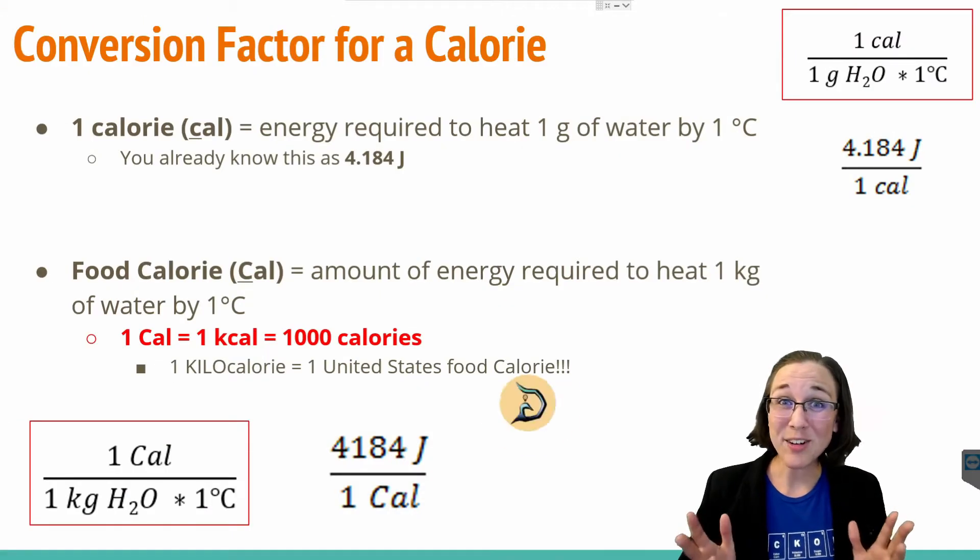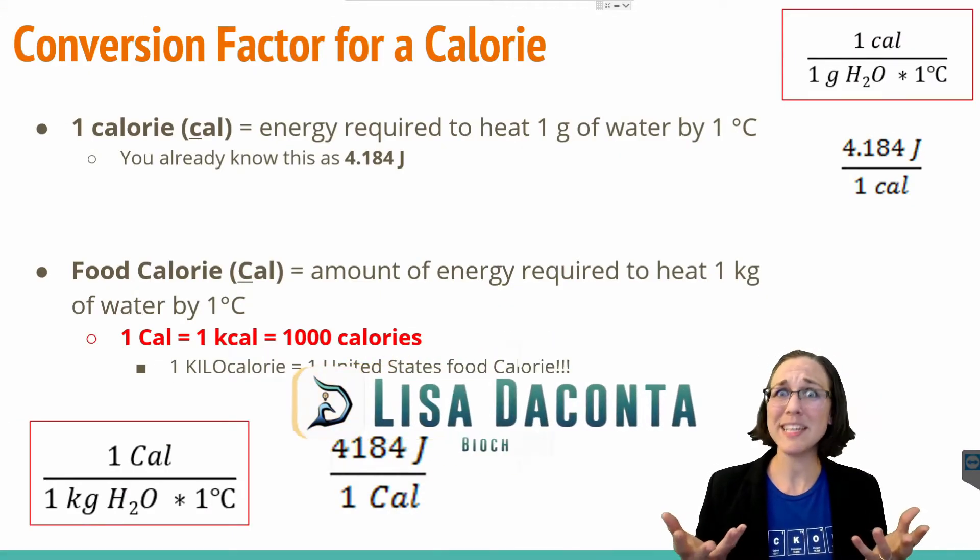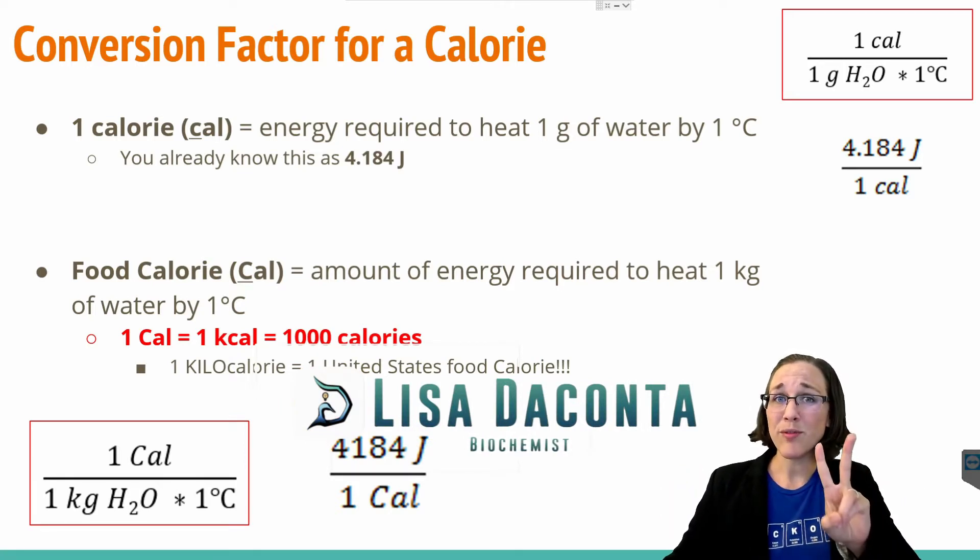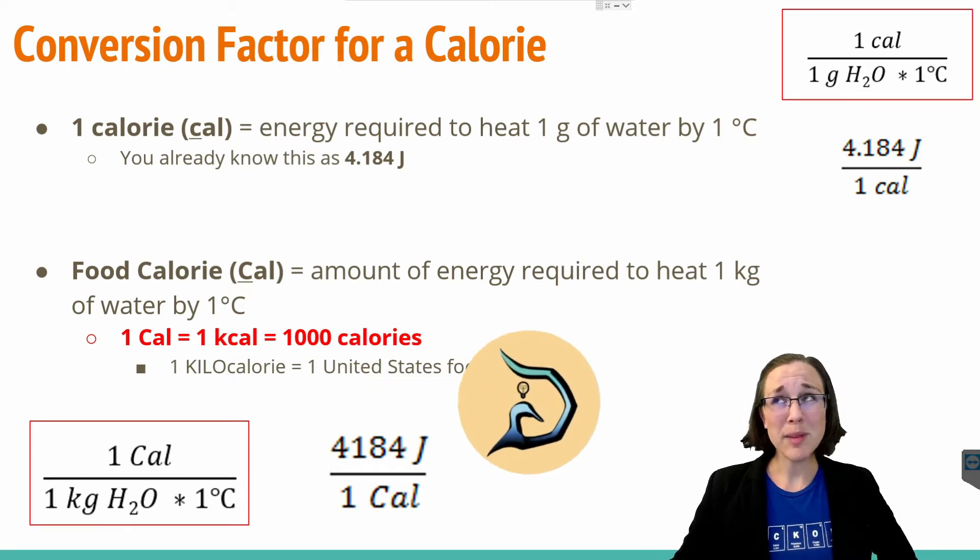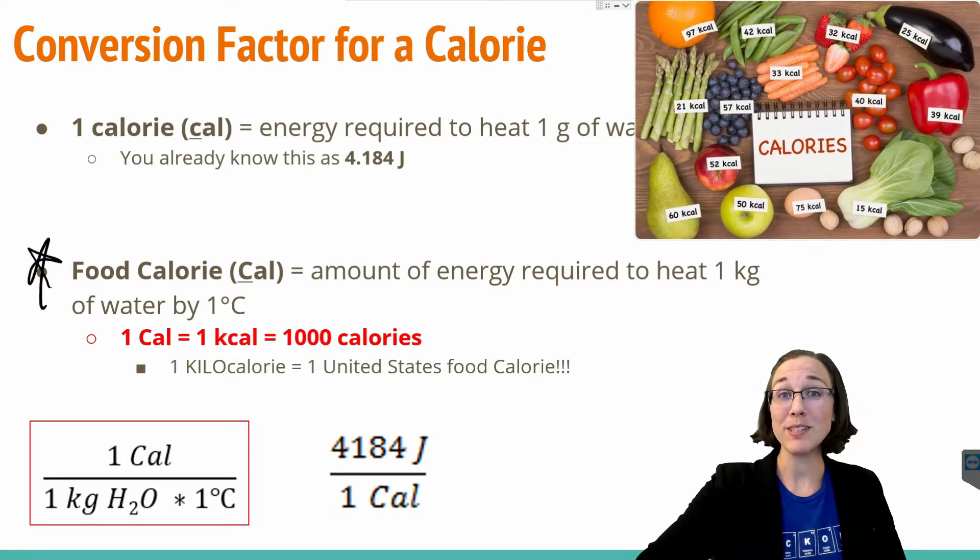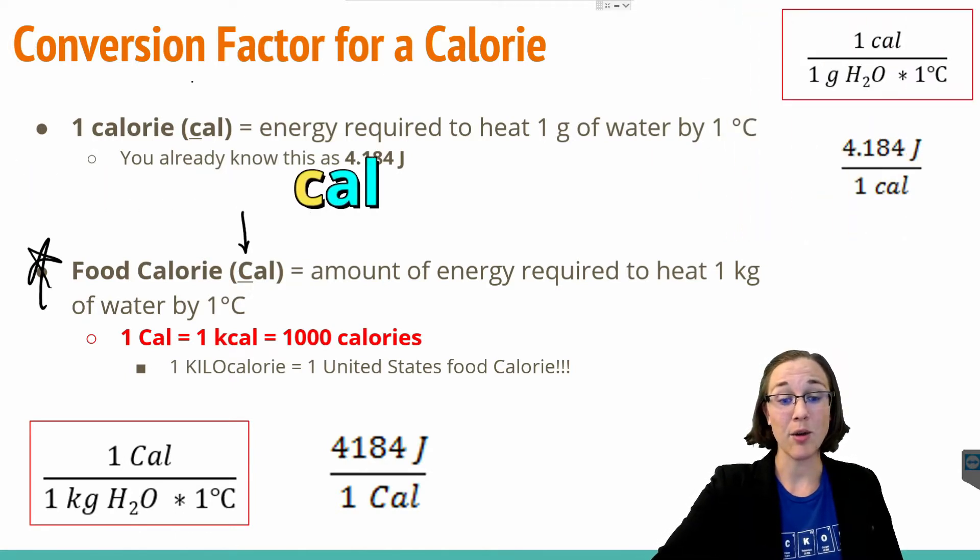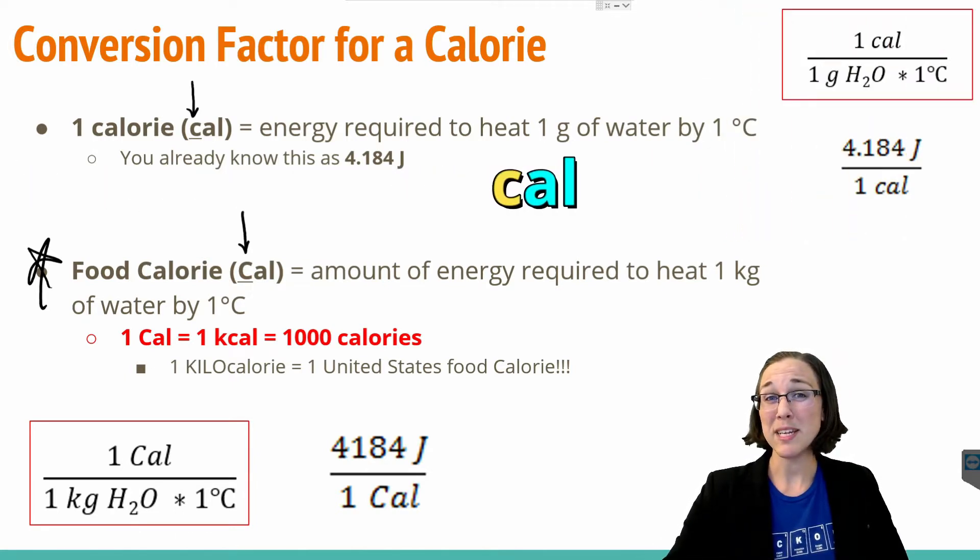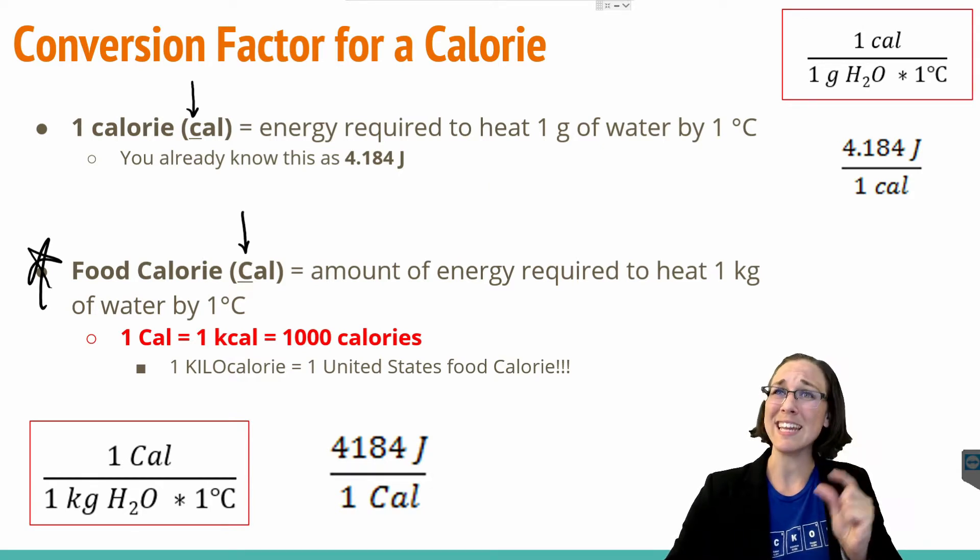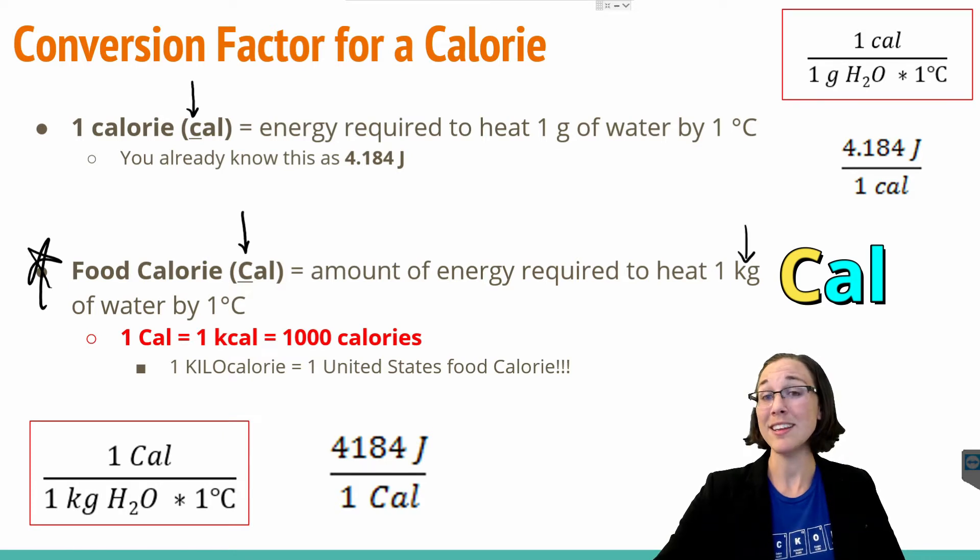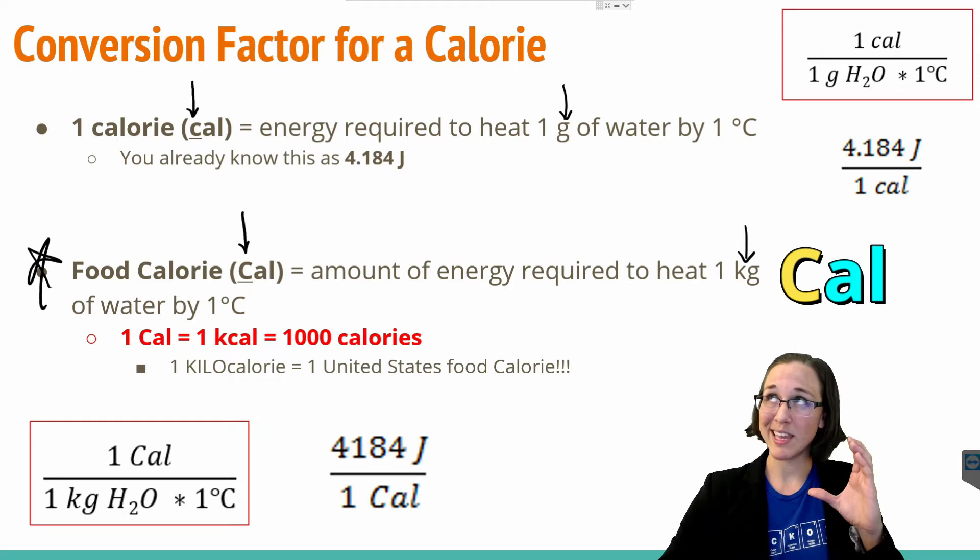Before we can calculate for a calorie, first we need to know what the conversion factor for a calorie even is. There are two different kinds of calories. You've probably only heard of one, and that's the food calorie, represented with an uppercase C. The other kind of calorie is with a lowercase c. That just means there's a smaller unit associated with it, hence the smaller c. And the uppercase C has a bigger unit associated with it, kilograms, as opposed to grams. And since kilograms are bigger, it gets the uppercase C.